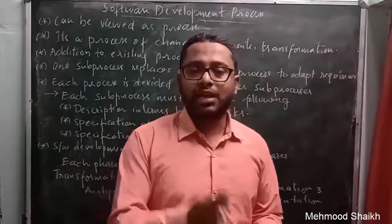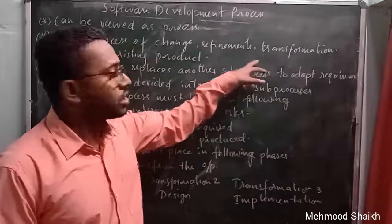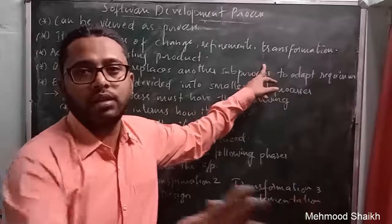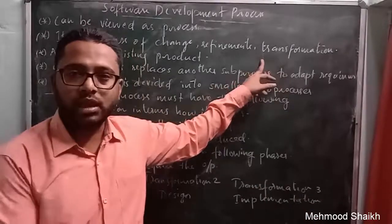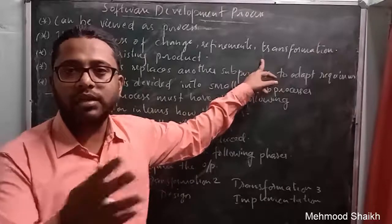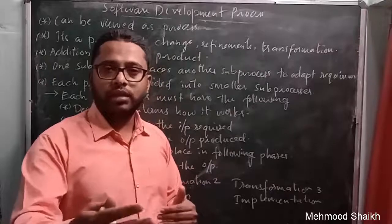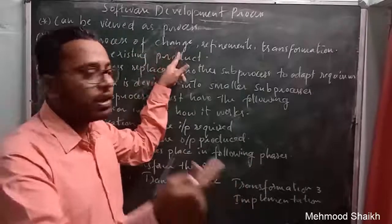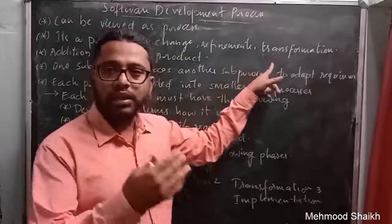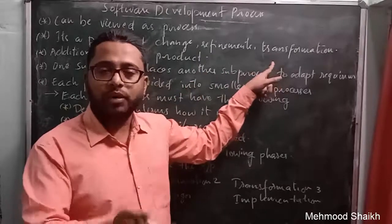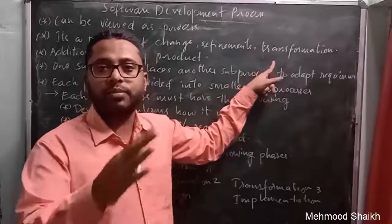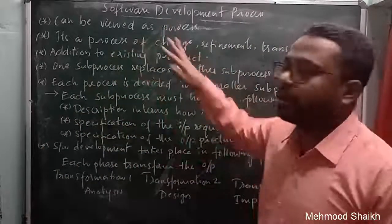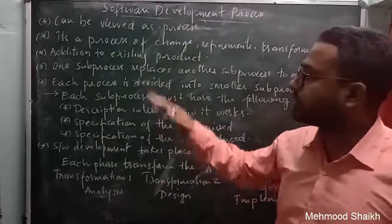With each step of system development, the system is transformed from one state to another. As we keep following the various activities of software development, there is continuous change applied to the system — we get more refinement, and we continuously keep transforming the system in terms of features, functionality, appearance, and behavior. That is the meaning of this second point.